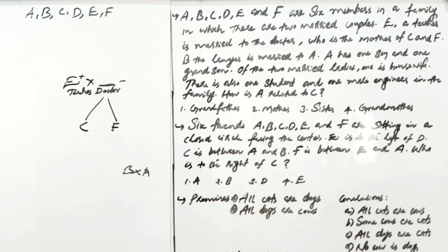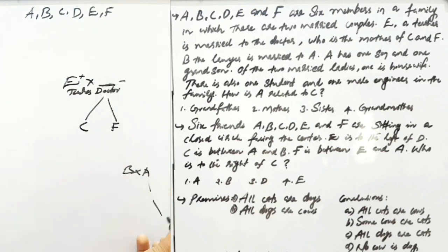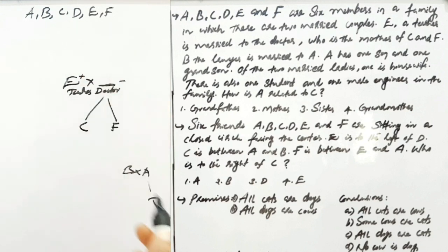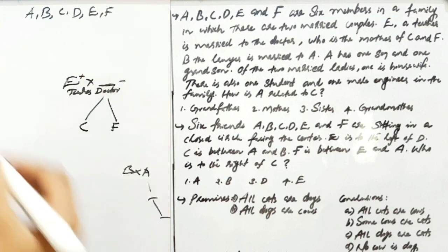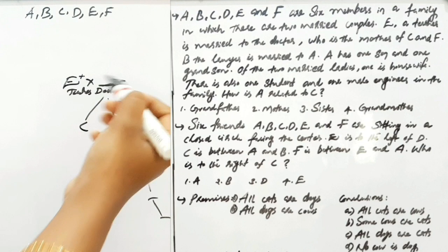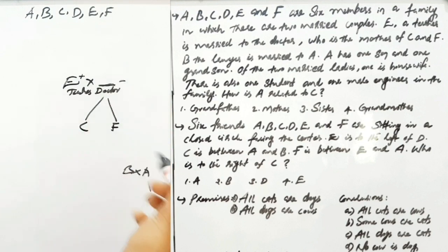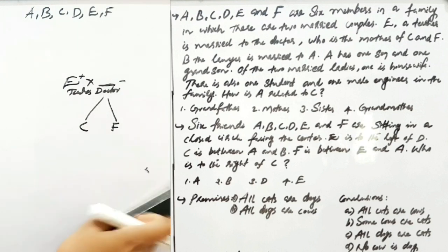A has one son and one grandson. So A has a son. If you have a grandson, that means A belongs to an older generation. A family has a son.